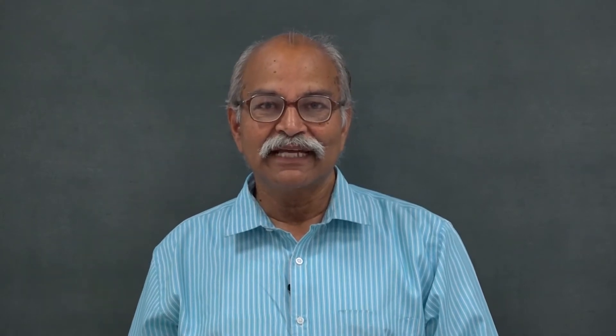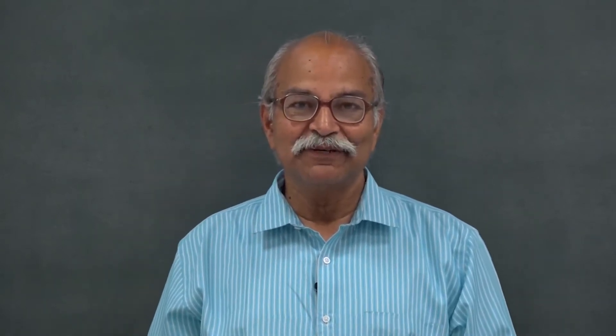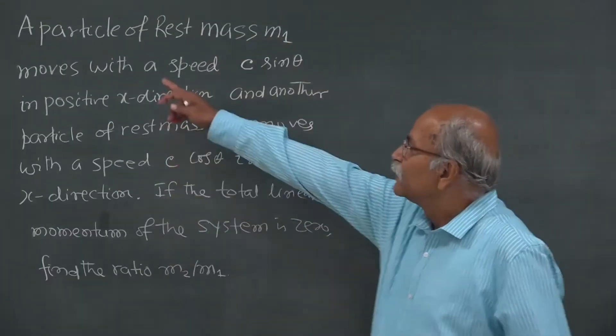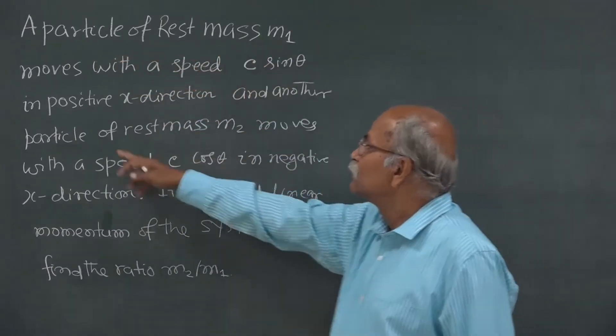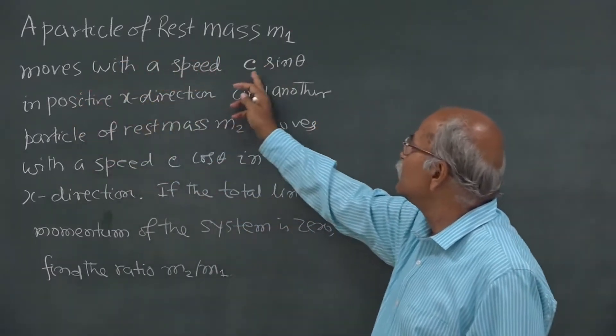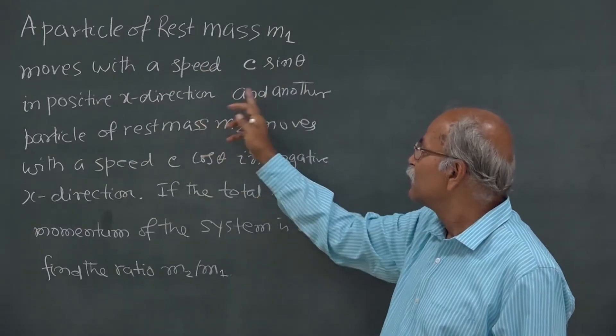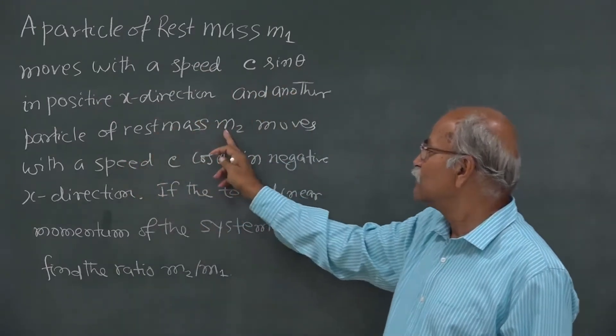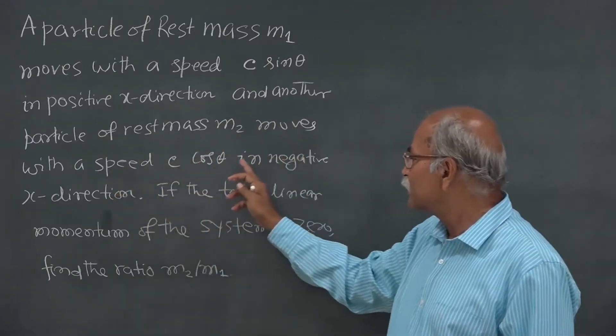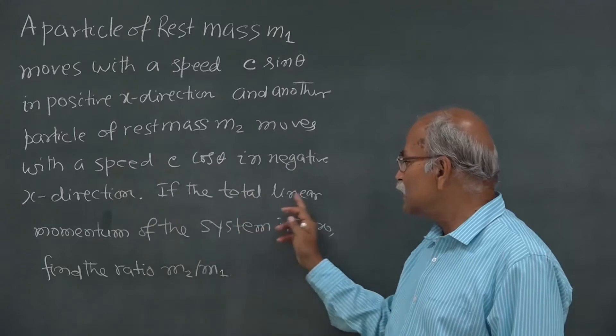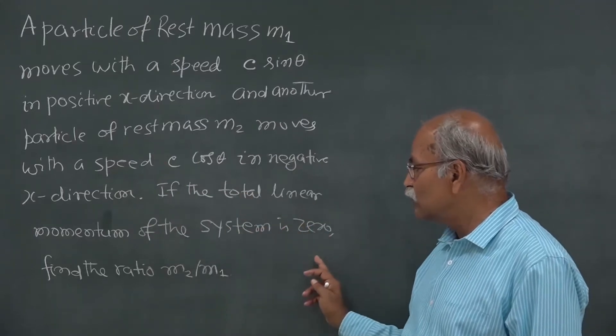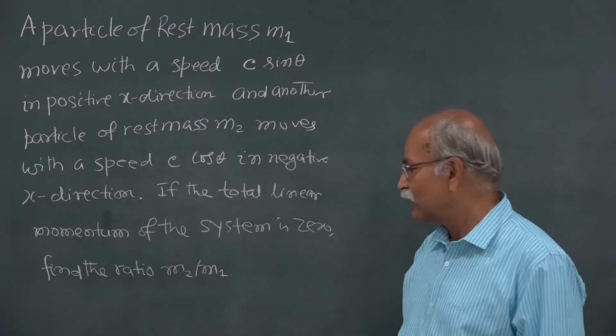Last time we solved some problems in relativistic dynamics. Today again the agenda is to solve more problems, and some specific methods you will learn from these problems. Our first problem: a particle of rest mass m1 moves with a speed c·sinθ in the positive x direction, and another particle of rest mass m2 moves with a speed c·cosθ in the negative x direction. If the total linear momentum of the system is 0, find the ratio m2/m1.